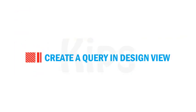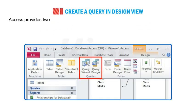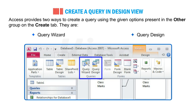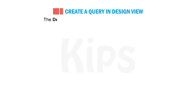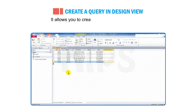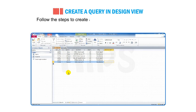Let me tell you how to create a query in Design View. Access provides two ways to create a query using the options present in the Other group on the Create tab: Query Wizard and Query Design. The Design View gives you more control over a query and allows you to create a query from scratch. Follow these steps to create a query using the Query Design option.